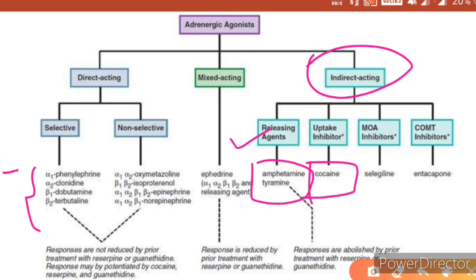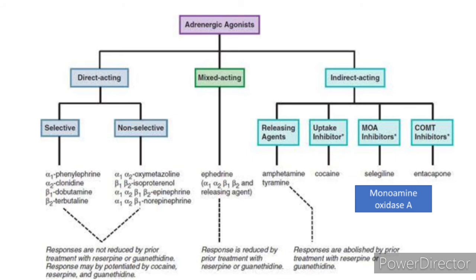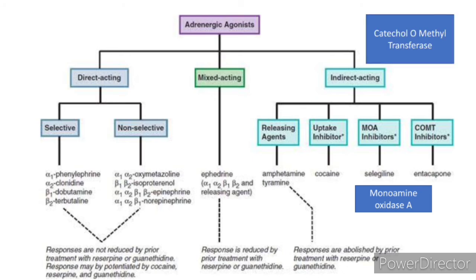Noradrenaline is terminated by reuptake into vesicles. Reuptake inhibitors like cocaine and tricyclic antidepressants act so that more noradrenaline is available in the synapse. We also have MAO inhibitors (monoamine oxidase inhibitors) and COMT inhibitors — catechol-O-methyltransferase inhibitors — like entacapone; selegiline is a MAO inhibitor.